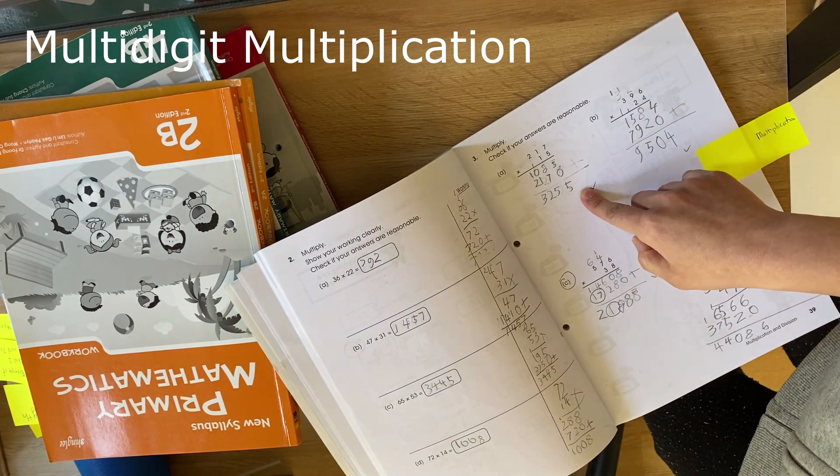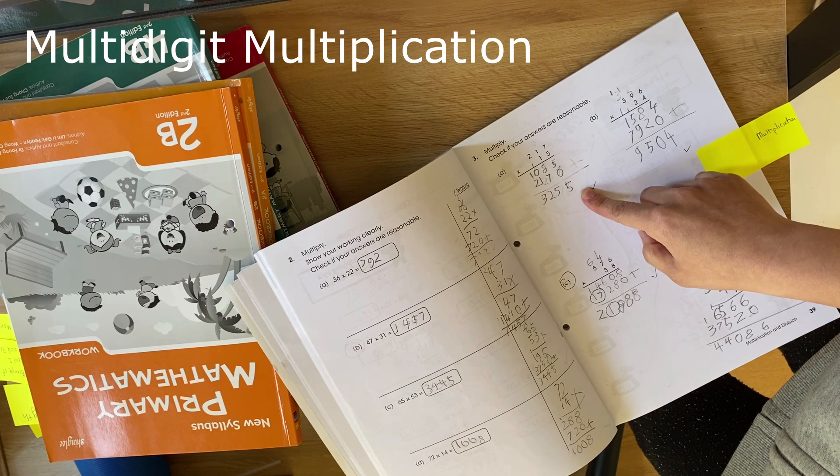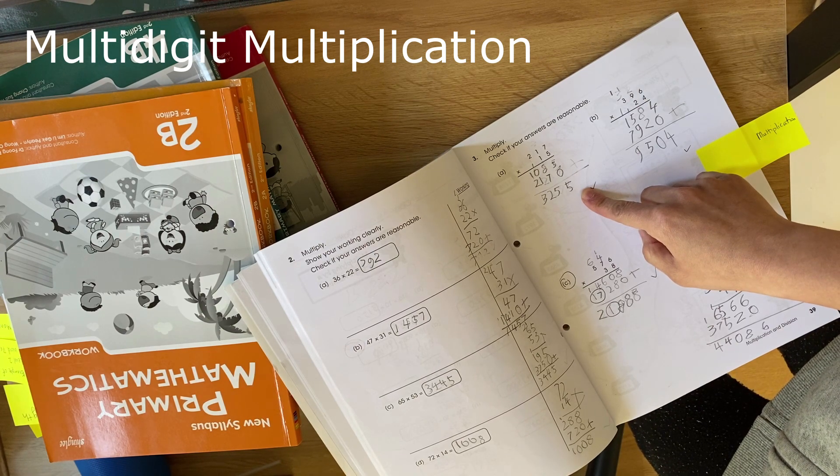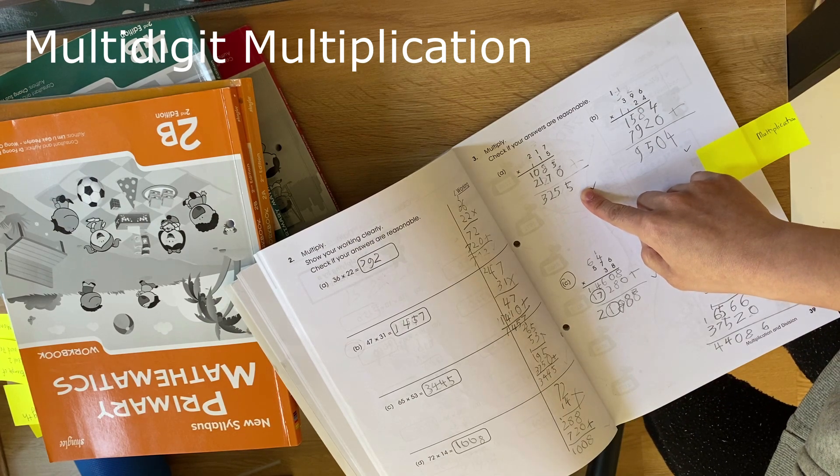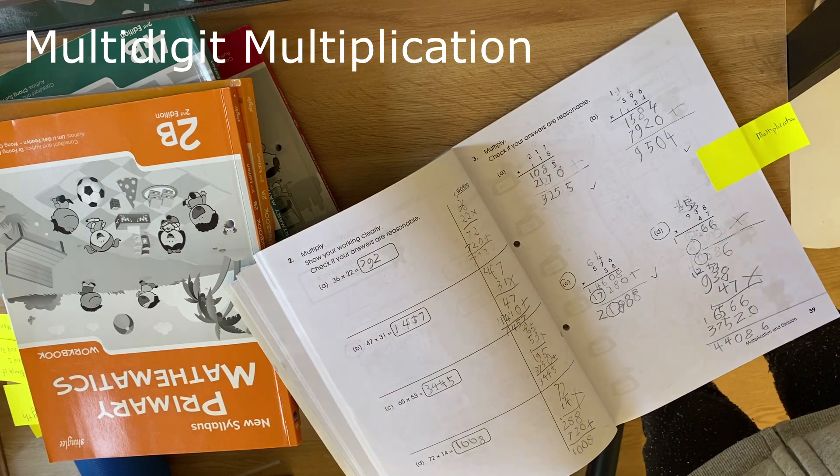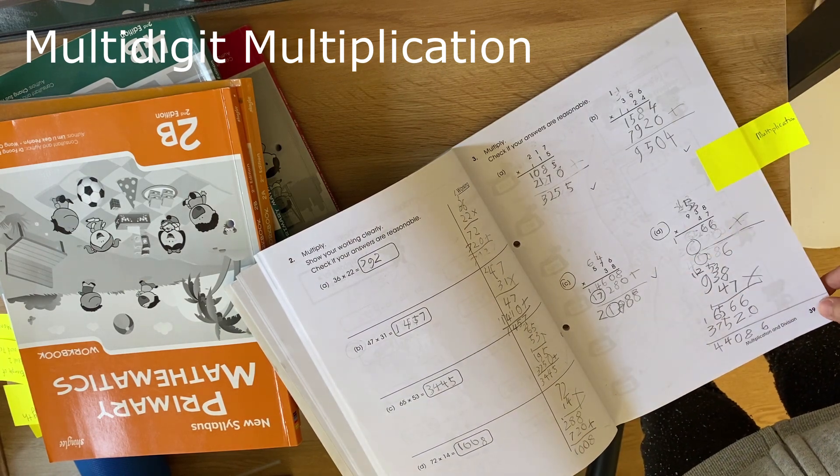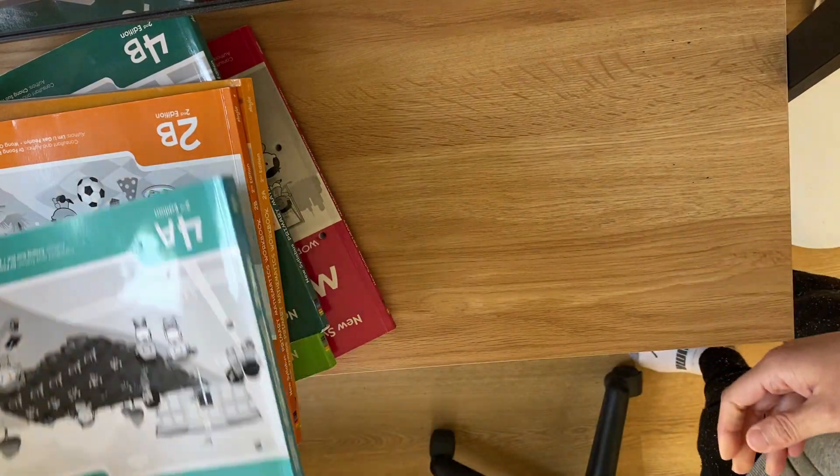So this would be important to note if you're taking your kid out of mainstream schooling, or you're wanting to transition your child back into a mainstream school. A lot of schools nowadays use the block method to multiply. So you might need to catch them up on both types. The lattice approach, I think, is also pretty popular.